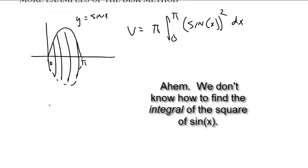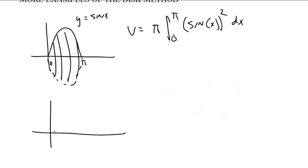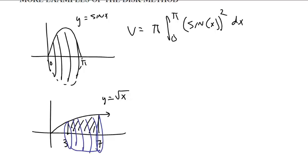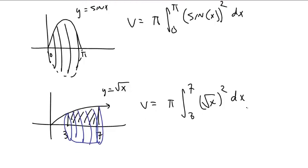Suppose you had the square root of x, y equals the square root of x, and you just wanted some little bit of it from three to seven, and you took that area and you rotated it around the x-axis, and you got some sort of weird lumpy thing like that. The volume is going to be π times the integral from three to seven of the square root of x squared dx. Well, that's easy because that's the integral of x, but I'm just showing examples. Let's not go through all the calculations just now.